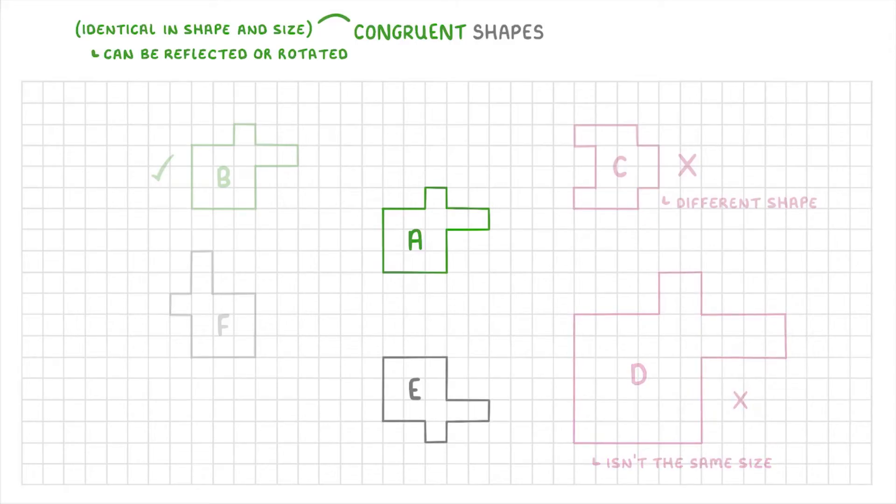Now, at first, shape E might look like it's a different shape, but it's actually just been reflected in this line here, so that it's a mirror image. And this means that it does count as being congruent with A.